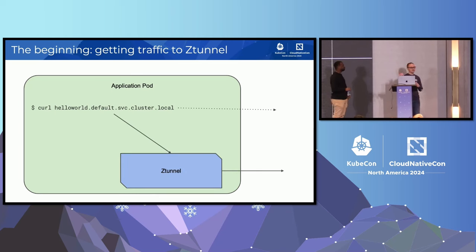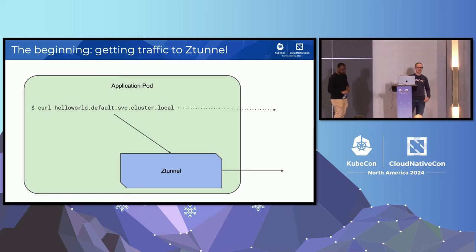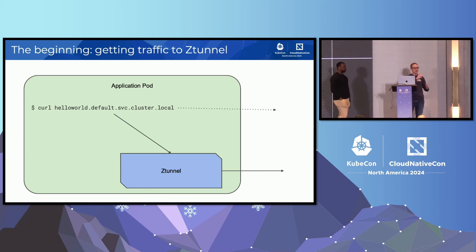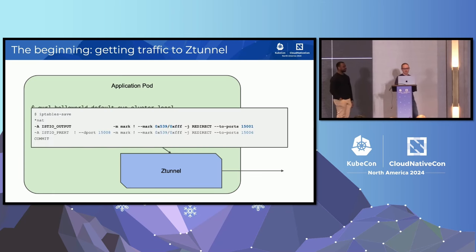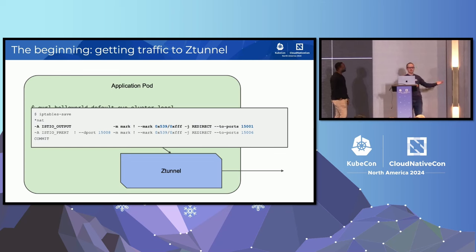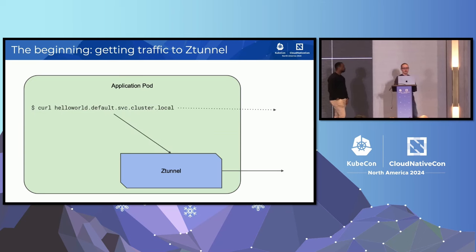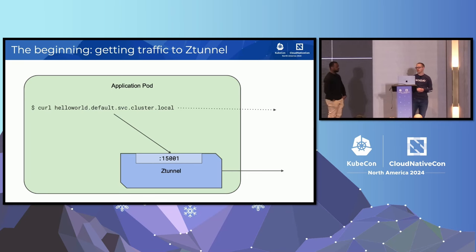You'll notice something: we said Z-Tunnel is a one-per-node daemonset running on the node, but I've shown Z-Tunnel inside of the application pod — I'll get into that later. How do we get traffic there? Depending on your familiarity with Istio or iptables, it's somewhere between dark magic and very basic iptables commands. Ultimately, we have a few simple-ish rules: for all traffic leaving the pod, redirect it to port 15001. Z-Tunnel opens port 15001 to accept that traffic — very similar to the sidecar model.